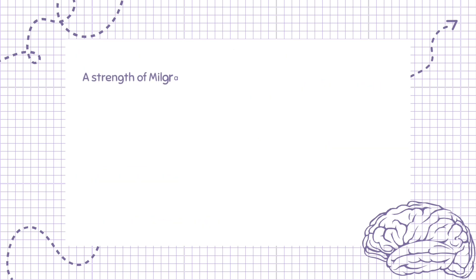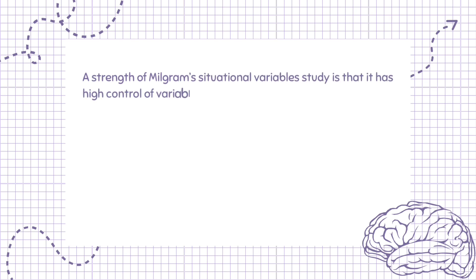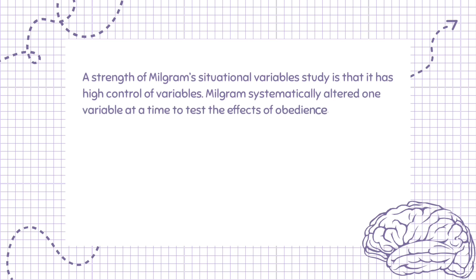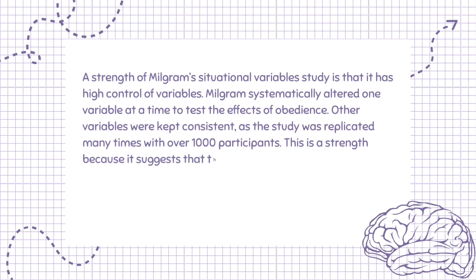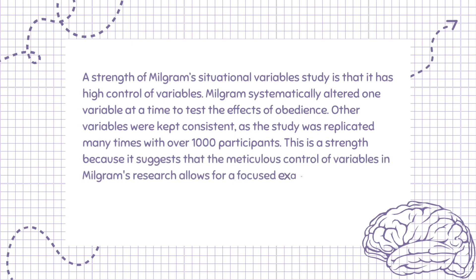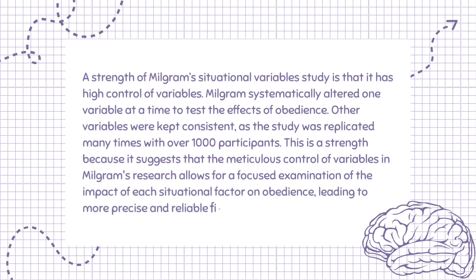A strength of Milgram's situational variables research is that it has high control of variables. Milgram systematically altered one variable at a time to test the effects on obedience, while other variables were kept consistent, as the study was replicated many times with over 1,000 participants. This is a strength because the meticulous control of variables allows for a focused examination of the impact of each situational factor on obedience, leading to more precise and reliable findings.